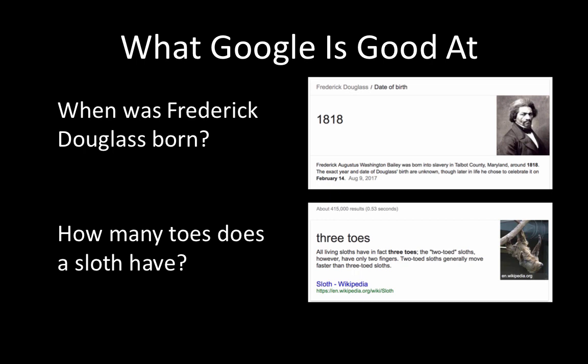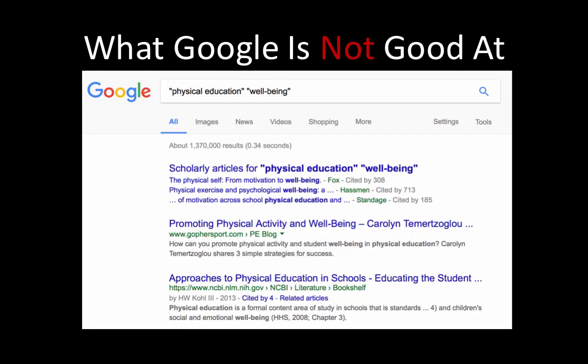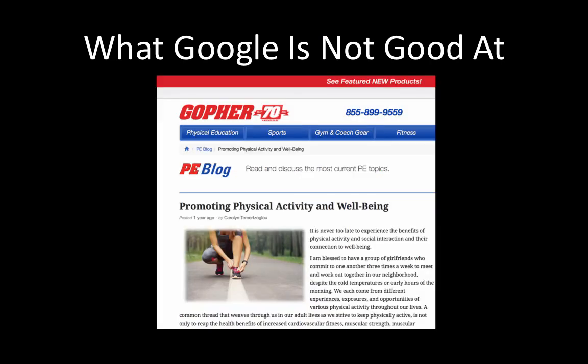Many of the questions you will be investigating in your college courses, however, are the types of questions that Google is not well suited for answering. For example, if we Google 'physical education and well-being,' we get over 100 million results. While the first few of these results may be relevant, what you'll most likely find are resources that are not written by experts or even scholars, and are therefore not accurate sources of information.